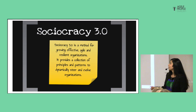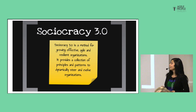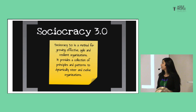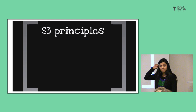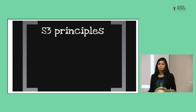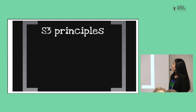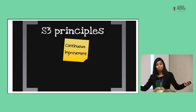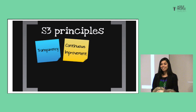But what is Sociocracy 3.0 and why did I even think about it? It is exactly this definition: Sociocracy 3.0 is a method for growing effective, agile, and resilient organizations — and it provides a collection of principles and patterns to dynamically steer and evolve organizations. I'll tell you a little about the patterns in Sociocracy 3.0 for those who probably don't know them, so you understand why this was my choice for coaching this organization. The first pattern is continuous improvement — familiar and very compatible. The next ones are transparency, effectiveness, equivalence, and accountability.